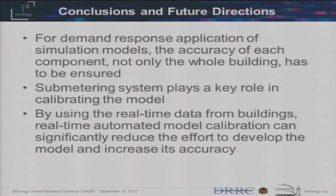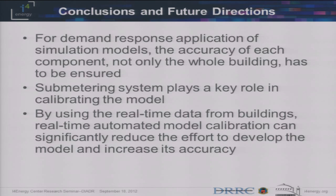For the demand response application of simulation models, accuracy of each component — not just the whole building — must be ensured. That is the key point to improving simulation model accuracy. Secondly, the submetering system plays a key role in calibrating the model — through the data points from the submetering system, we can identify where the error is. Thirdly, by using real-time data from the building, we can perform real-time automated model calibration, which reduces the effort to develop the model while increasing model accuracy.